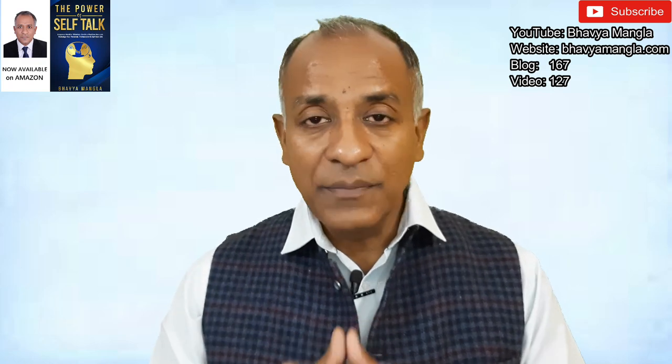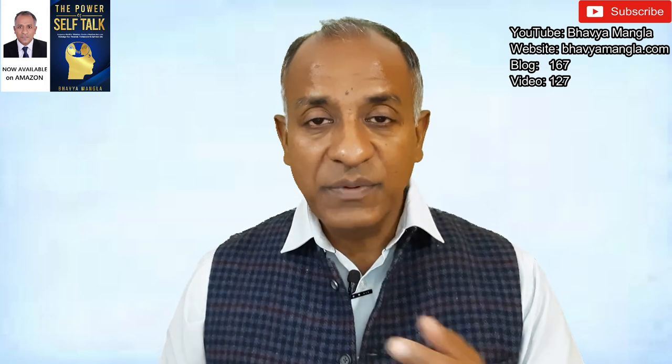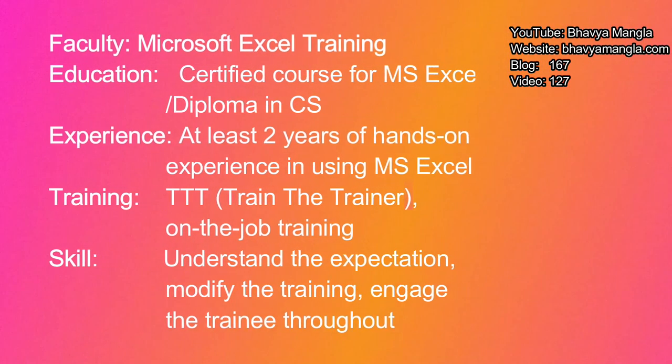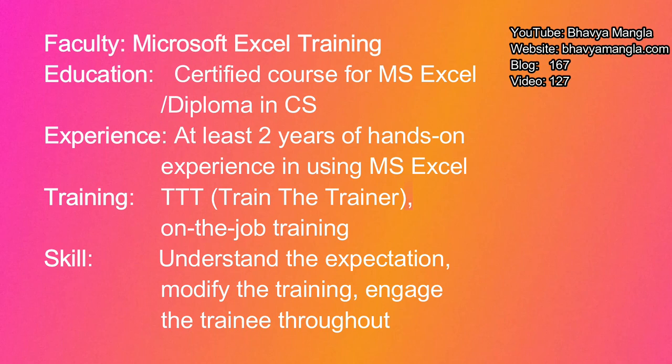Taking the Microsoft Excel example again with these four components: for education, it could be a certified course in Microsoft Excel or a diploma in computer science. For experience, it could be two years of hands-on experience using Excel. For training, it could be Train the Trainer or on-the-job training. And for skill — the most important part — the trainer should understand the expectations of participants, know how to modify the training accordingly, and know how to engage trainees throughout the training.